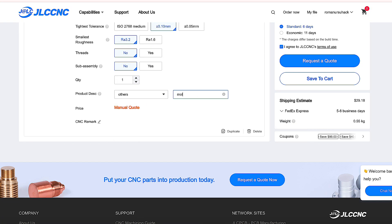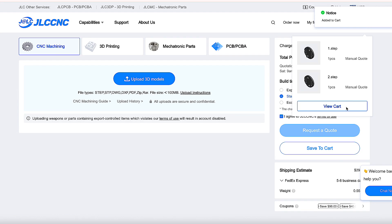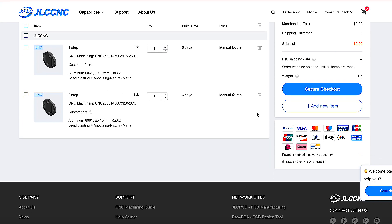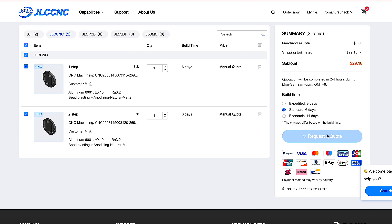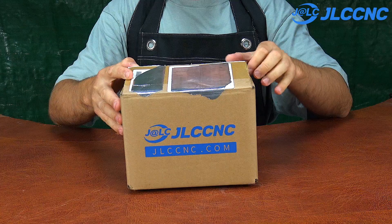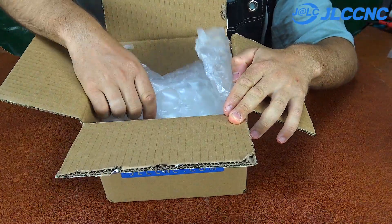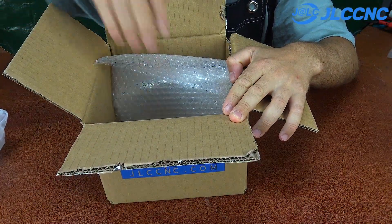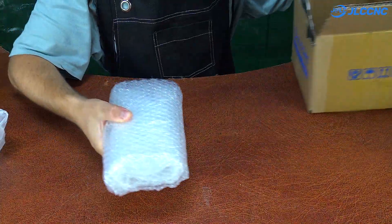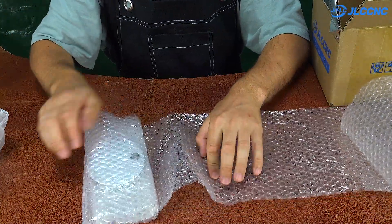JLCCNC's advantages are impressive: competitive pricing from prototype to production, fast turnaround—parts can be ready in as little as three business days—and reliable quality. Every step is carefully monitored: dimensions, surface, finish, and packaging. You can choose materials: aluminum, brass, stainless steel, all top grade.